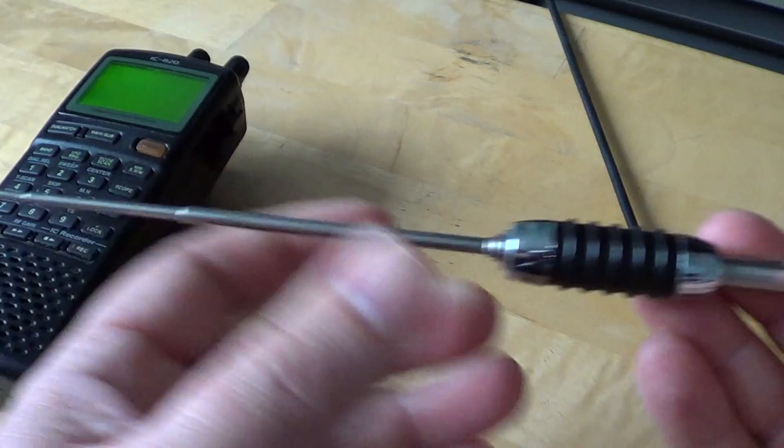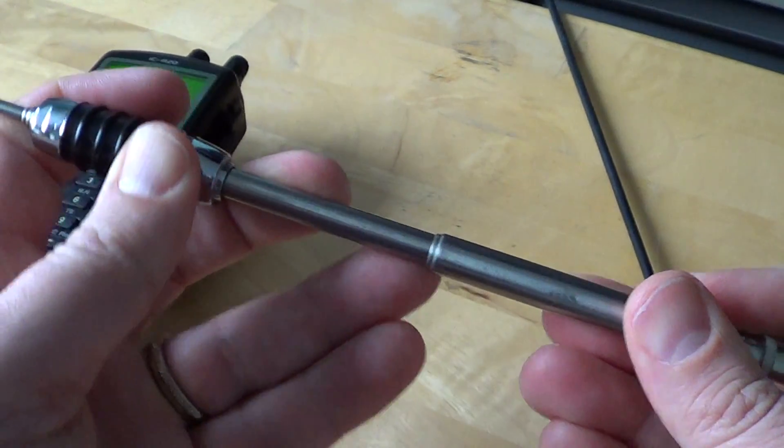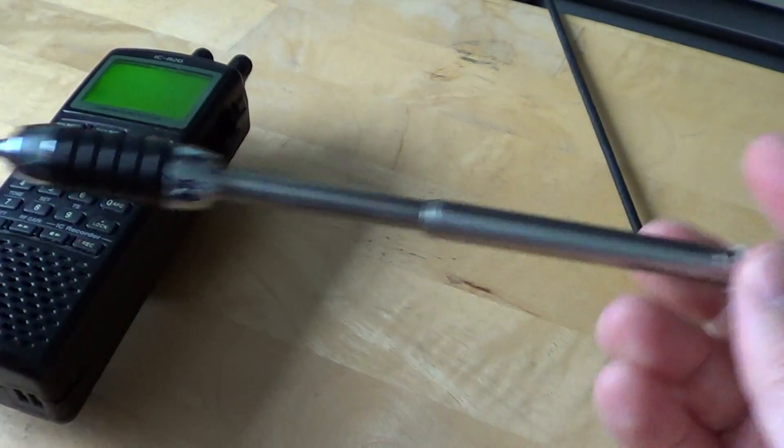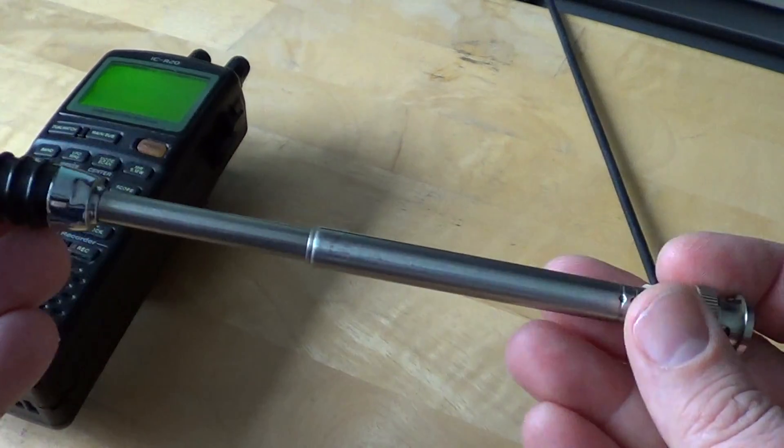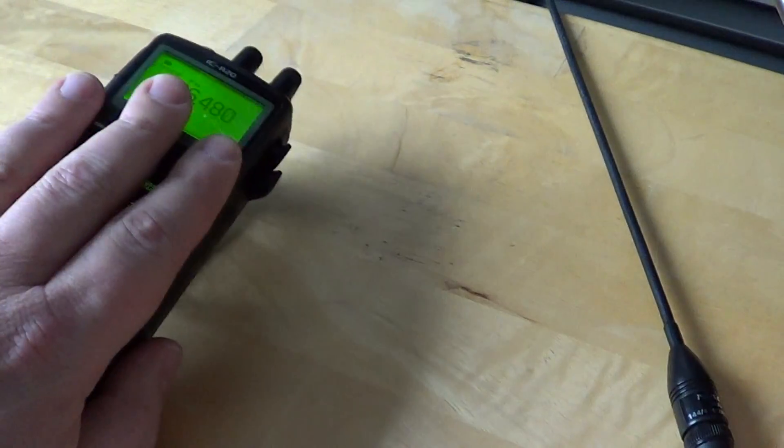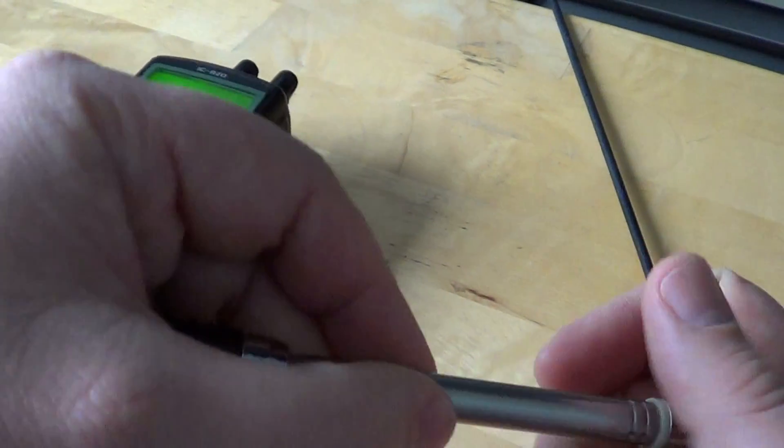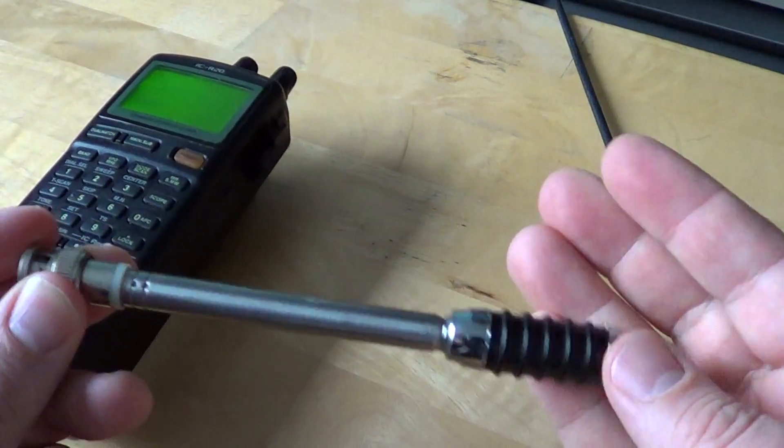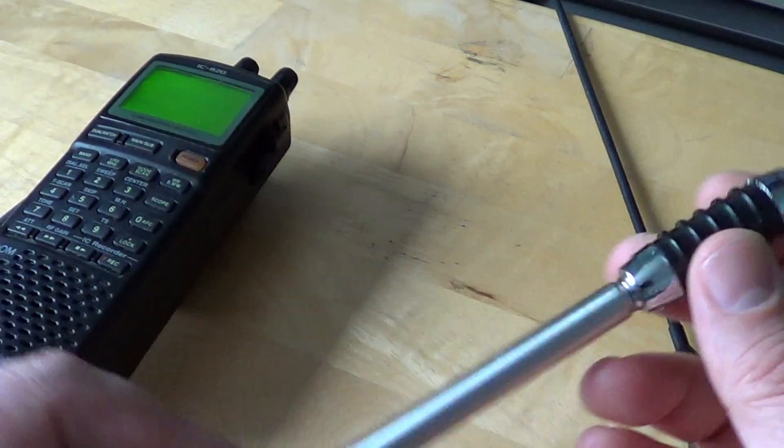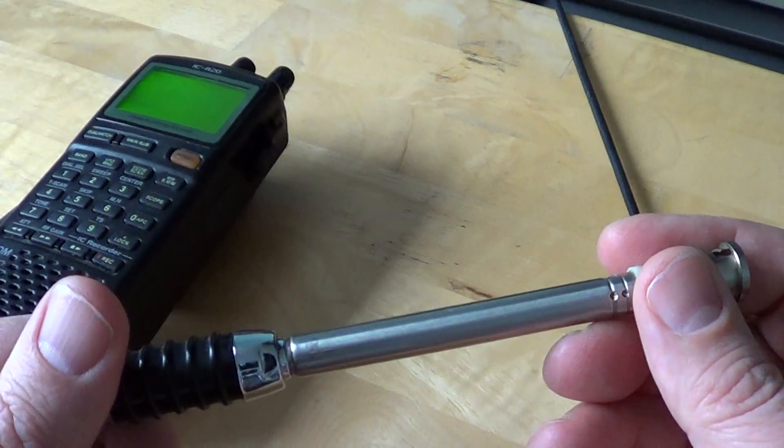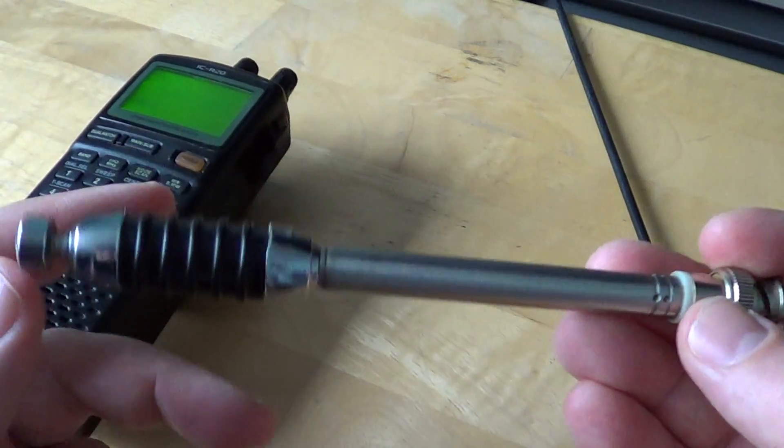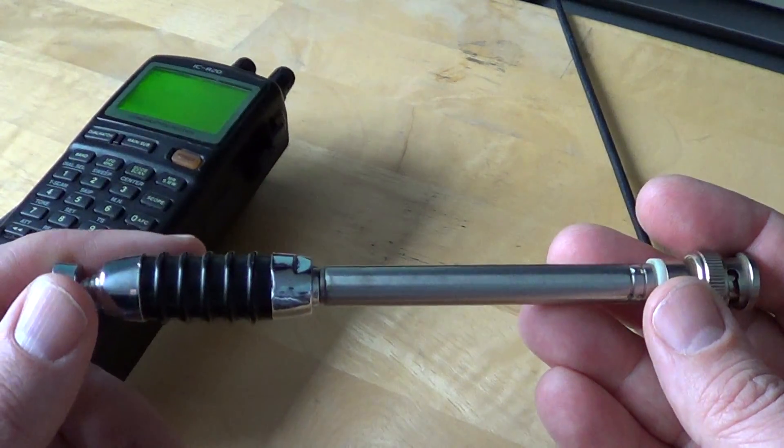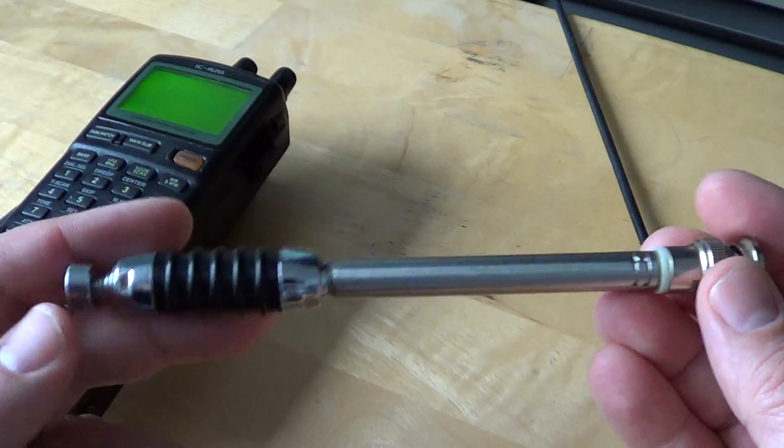So it's going to be more resonant at 150 megahertz. If I'm listening to UHF signals around 450 megahertz, I'll shorten it some more, leave only a few extended sections. And if I listen to signals up to 3 gigahertz, I'll have it fully closed because it's probably more resonant if it's small.